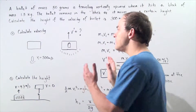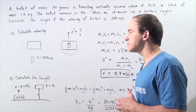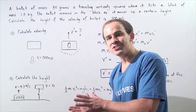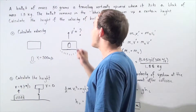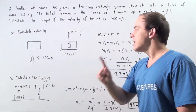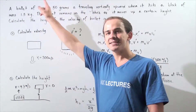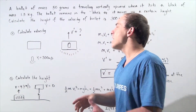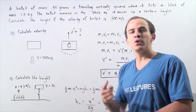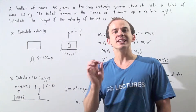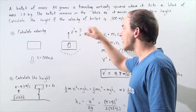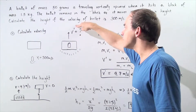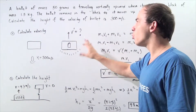Let's look at step one. Right before the collision takes place, we have the block with mass 1.5 kilograms that is stationary, and a bullet with mass 0.05 kilograms traveling upward in the positive direction along the x-axis with a velocity of 300 meters per second. After our collision, we have one object composed of the bullet and the block together, with a certain velocity v prime. We want to calculate what v prime is.